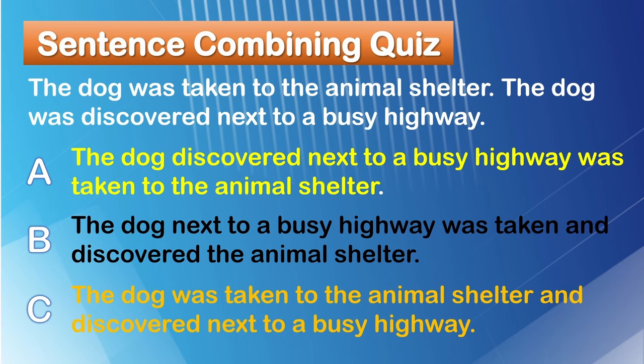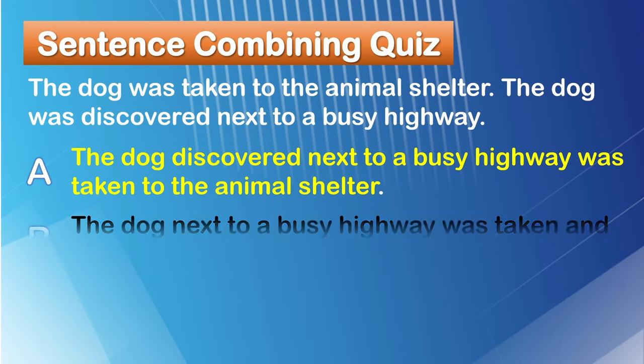The correct answer is A. We'll input the answer in simple sentences, run it through AI and see how we score overall and specifically with grammatical complexity. And then we'll rewrite it as a complex sentence and run it through again.